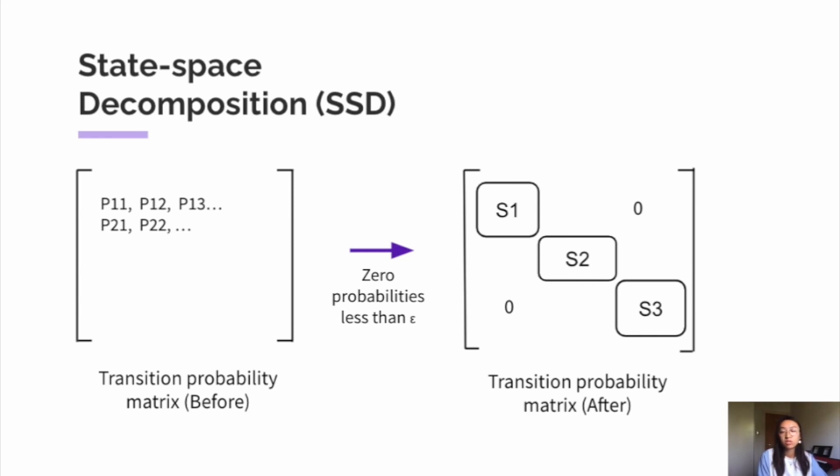And when we normalize the resulting submatrices, we end up with multiple independent smaller RL problems which can be learned on separate neural networks.